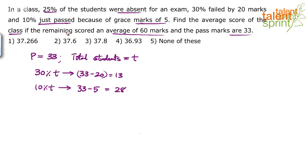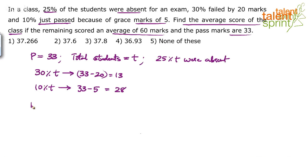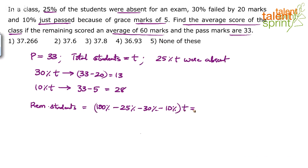Now, he is asking us to find the average score of the class if the remaining scored an average of 60 marks. What is 'remaining'? 25% were absent, 30% we have taken, 10% we have taken — so 25 plus 30 plus 10 equals 65%. Remaining students: 100% minus 65% equals 35% of T. These 35% of students scored an average of 60 marks.